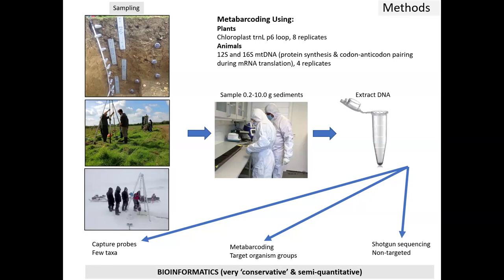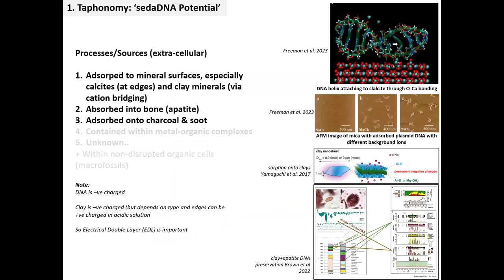We're very interested in understanding the taphonomy of sedaDNA because that controls its potential and how we can interpret results. We know it's adsorbed onto mineral surfaces, especially calcites and clay minerals via cation bridging. There are fantastic AFM images of DNA strands on mica. It's also absorbed onto bone, charcoal, and soot. Animals are probably largely coming from the calcite apatites, and plants largely from the clays.